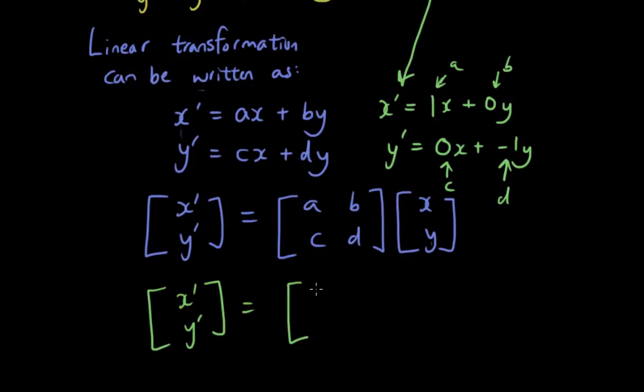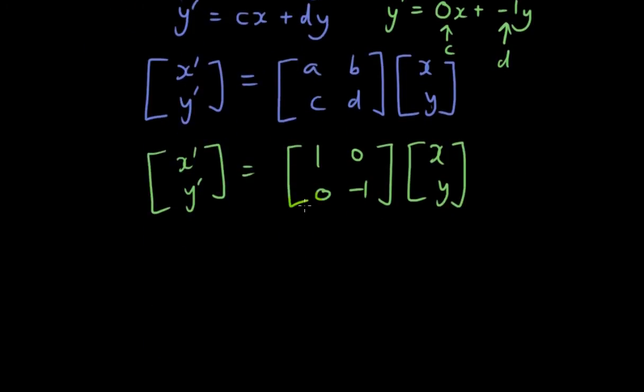So I can write it in my matrix equation. So I have [1, 0; 0, -1] times [x, y]. And [1, 0; 0, -1] therefore is what we call L, which is the transformation or linear transformation matrix.